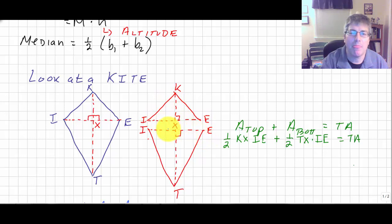And that would equal the total area of our kite. The area of the triangle on the top, the area of the triangle on the bottom, add them together, got your area of your kite. Well, looking a little bit more closely at what I have here, I have a common factor in my top triangle—one-half and IE, and one-half and IE.